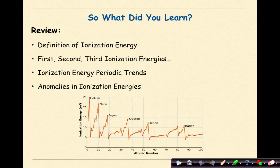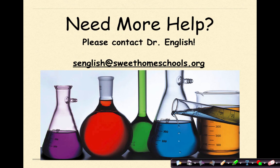So what did you learn? We looked at the definition of ionization energy. We talked about the difference between a first, second, and third ionization energy. We looked at some ionization energy periodic trends. And then finally, some anomalies in ionization energies. Need more help? Feel free to contact me. Have a great day.